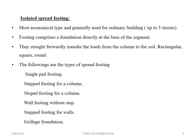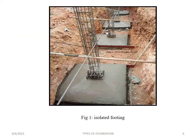The types of isolated spread footing are: single pad footing, stepped footing for a column, sloped footing for a column, wall footing without step, step footings for columns, and grillage foundation. In the figure showing isolated spread footings, we can see that the base and the column are connected to the base segment.